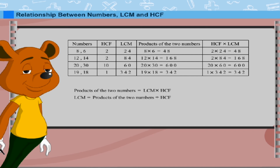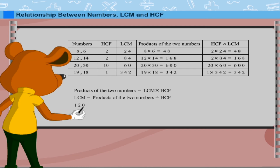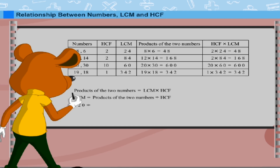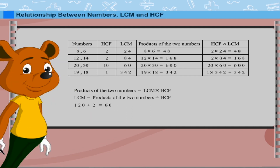Taking an example, Tobbe shows that if the product of two numbers is 120 and the HCF is 2, then the LCM will be 60.